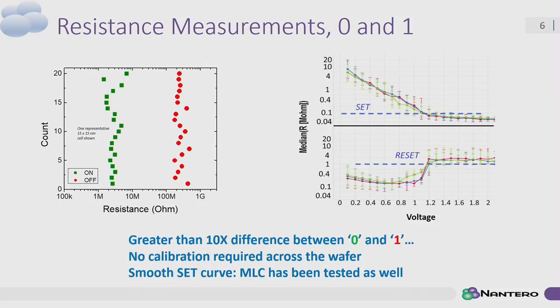What kinds of results do we get? With hundreds to thousands of nanotubes switching in every cell, we get a nice 10-to-1 ratio of set to reset states. Across the entire wafer, we see a consistent range where we can pick a sampling point for a digital cell. Our test data shows a nice linear slope on the set function as a function of inserted voltage and resistance. We also have a road map to pursue multi-level cell once single-level cell is in mass production.